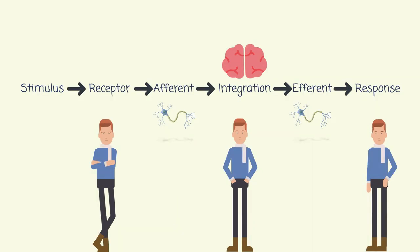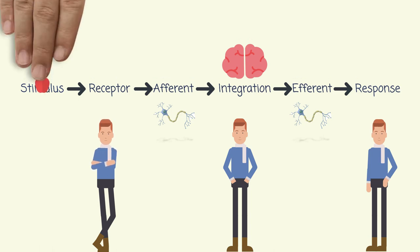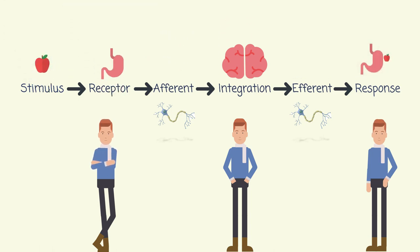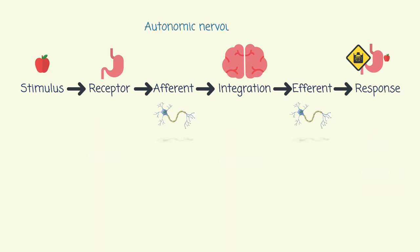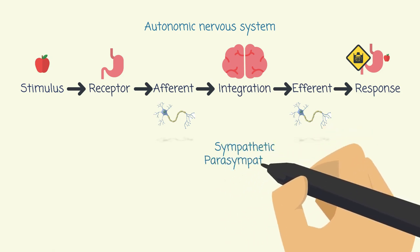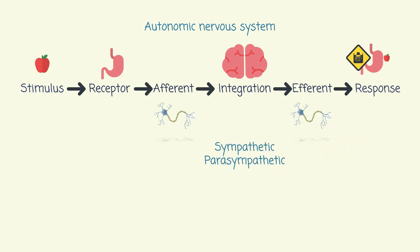But sometimes we are not aware of such a process between our nerves and our brain. For example, after eating an apple, when it enters your stomach, the response of producing acid is not in our control. Such a process is a function of the autonomic nervous system. Sympathetic and parasympathetic are the two divisions of the autonomic nervous system.